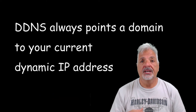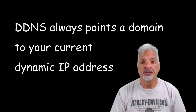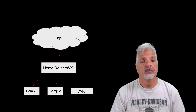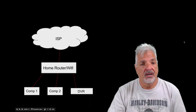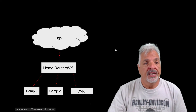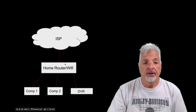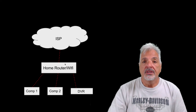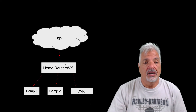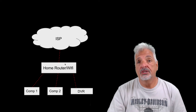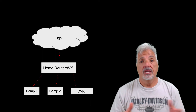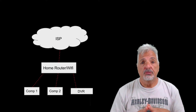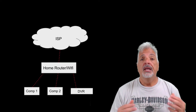Let's take a look at a typical home user setup. In this typical home user setup we're looking at the ISP connecting into a home router and then behind the home router we have a couple of devices. It could be a couple of computers, maybe a surveillance camera, DVR, etc.